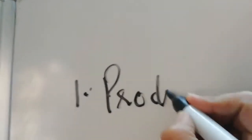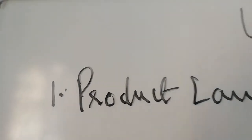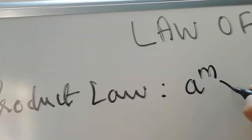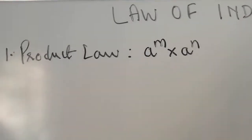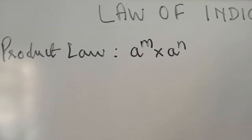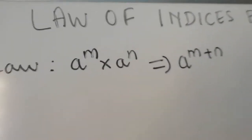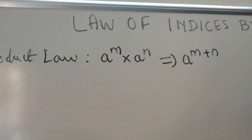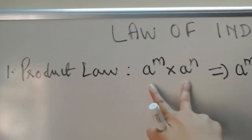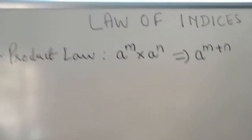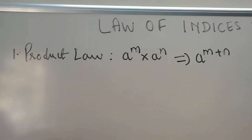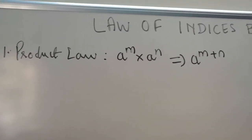The first law of indices is the Product Law. Product law basically means multiplication. So a^m into a^n — the friend of multiplication is addition — so your indices become a^(m+n). One very important point to remember in indices is that the base should always be the same. Only then can you implement the law of indices. If the base is different, you cannot apply it.